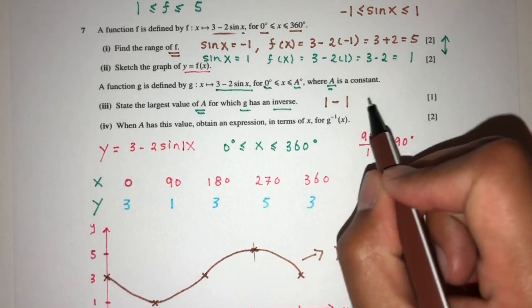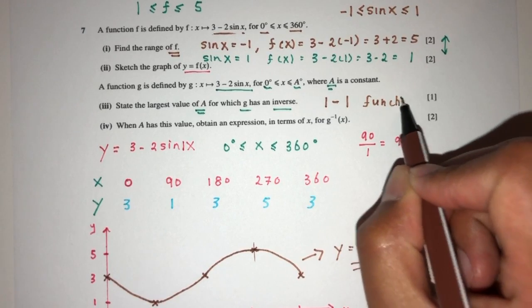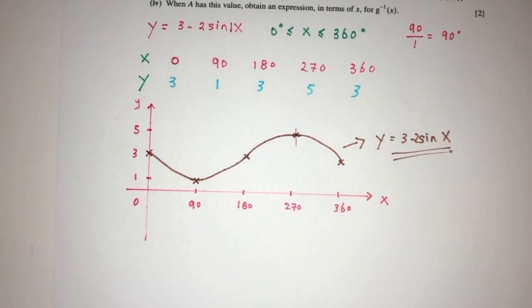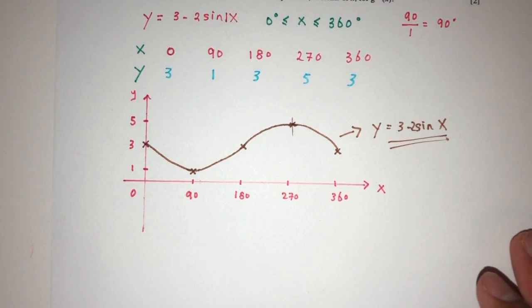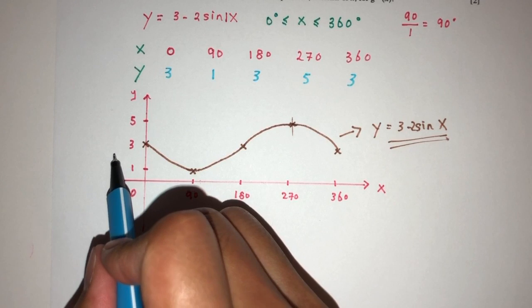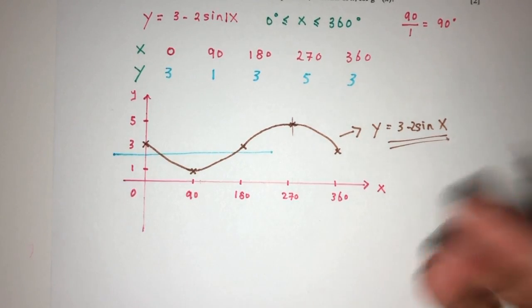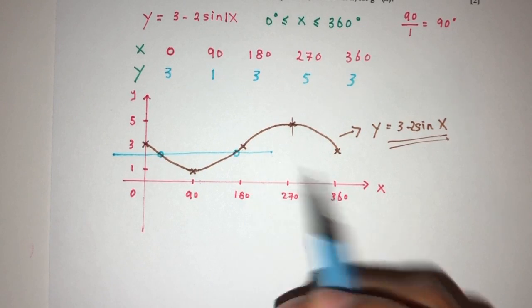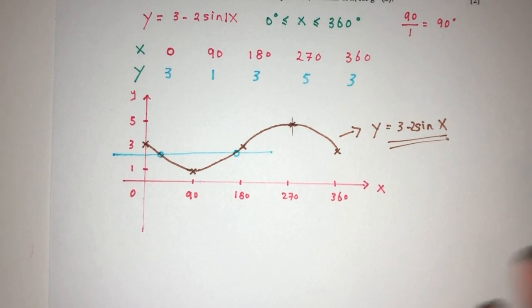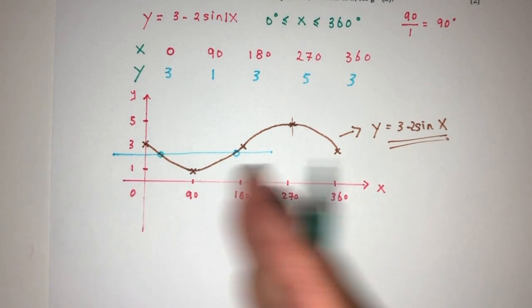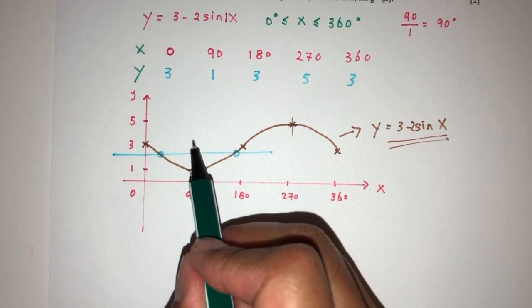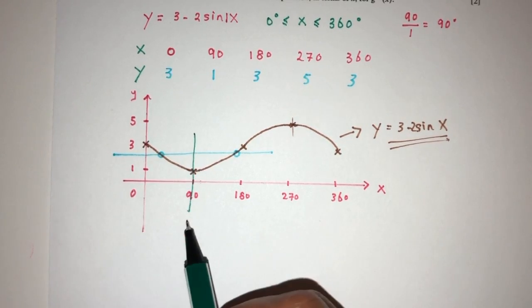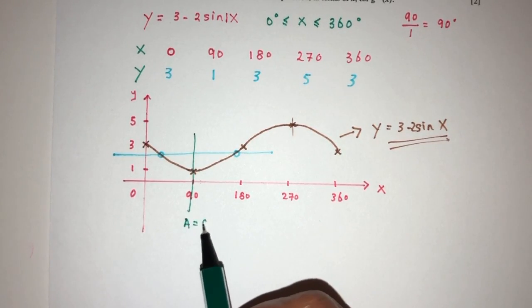So, for example, here. Now again, you don't have to draw this. So, for it to be a one-to-one function, if we draw a line, for example, we must have only one solution. Here we have two points of intersection. The only way to make this become a one-to-one function, we have to restrict the values we can take for x. For example, if you stop the value of a to be 90,